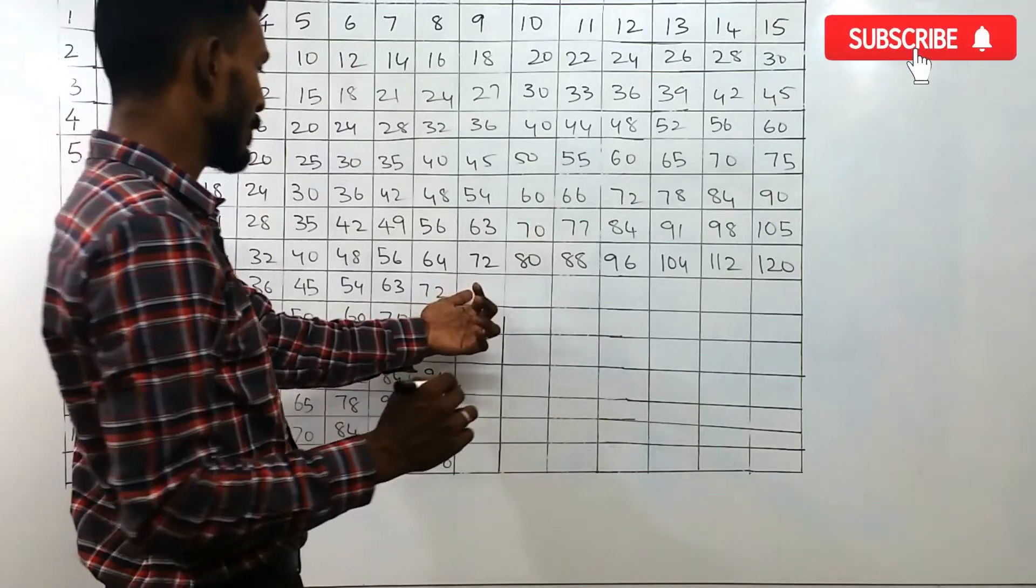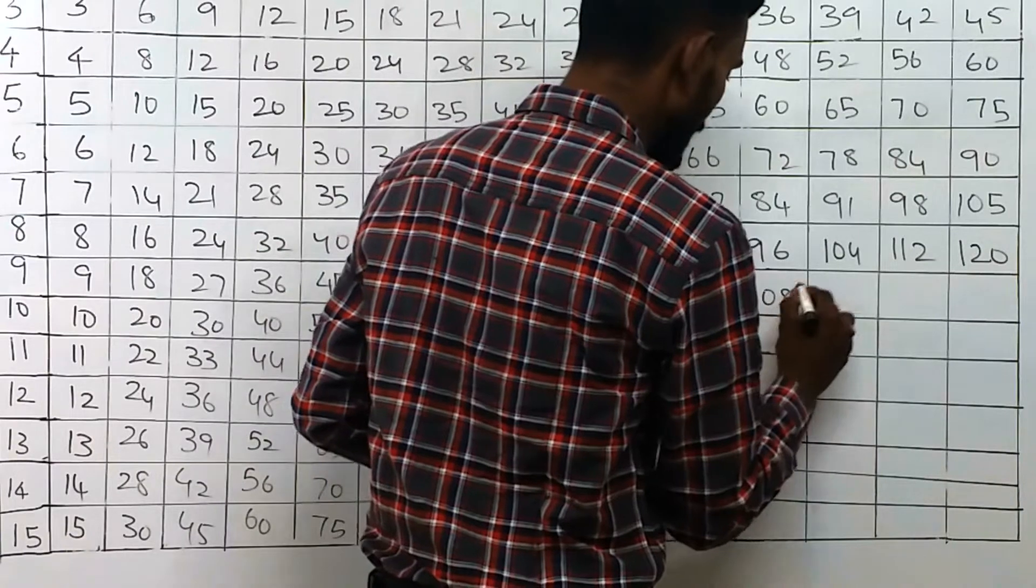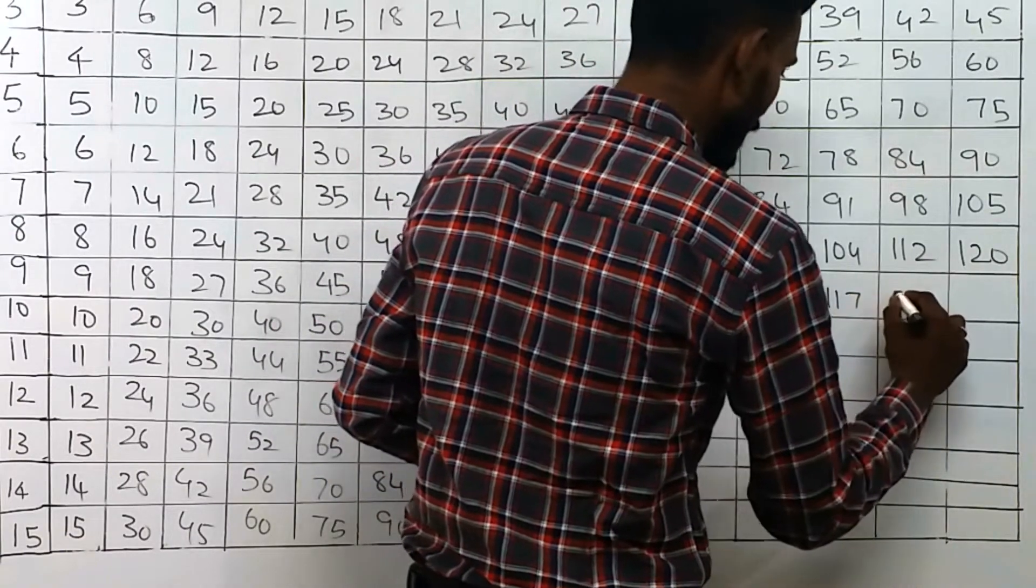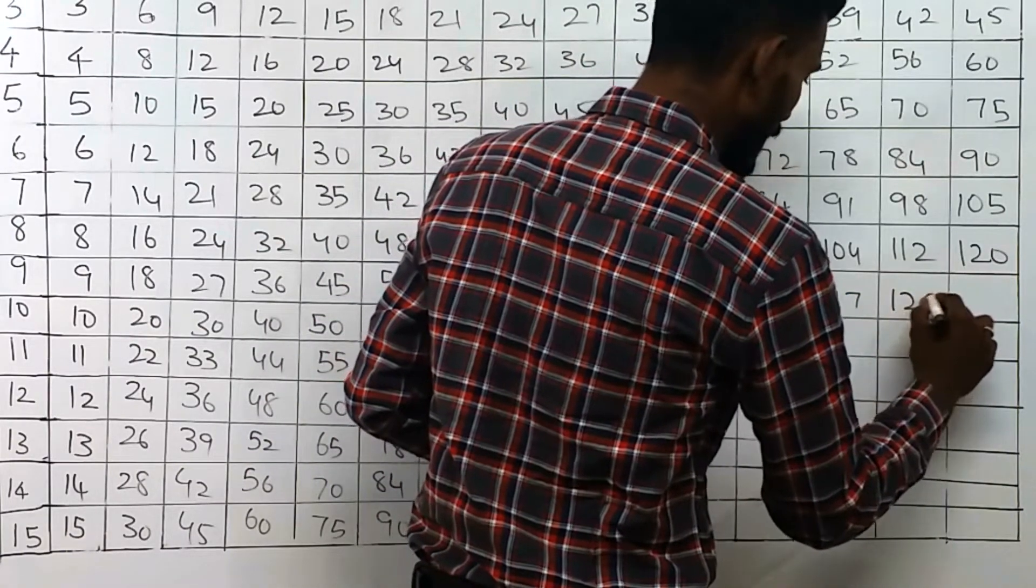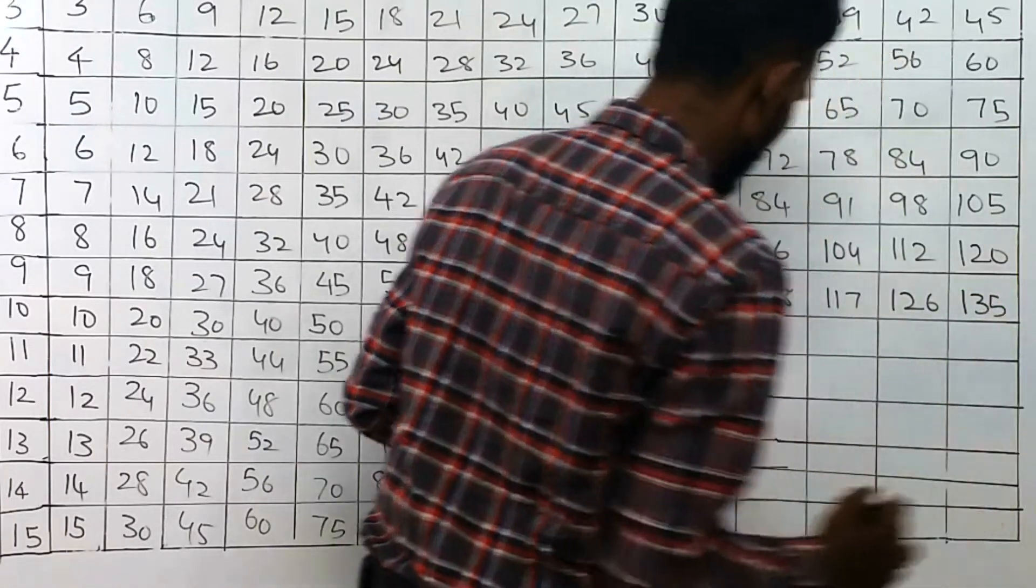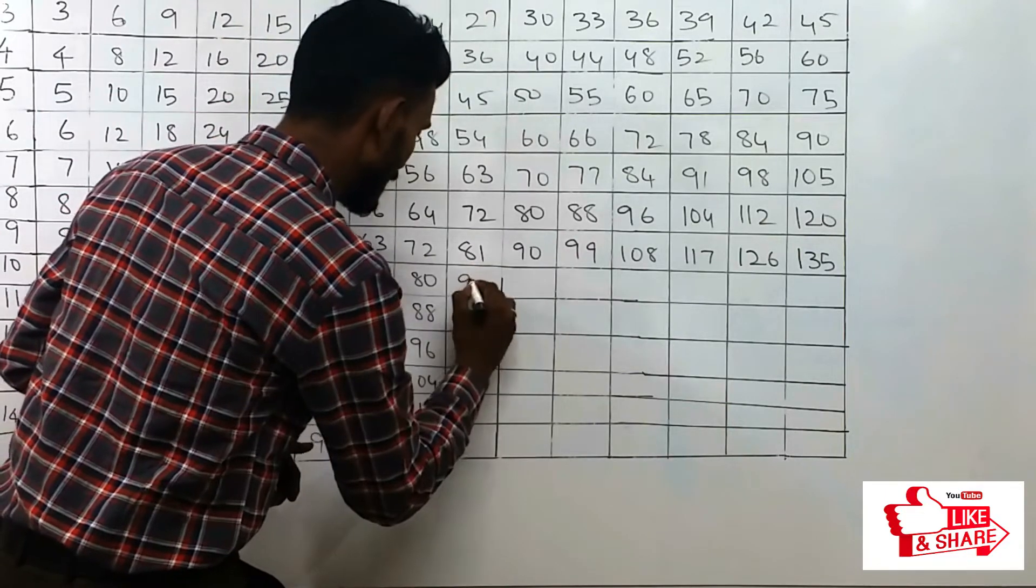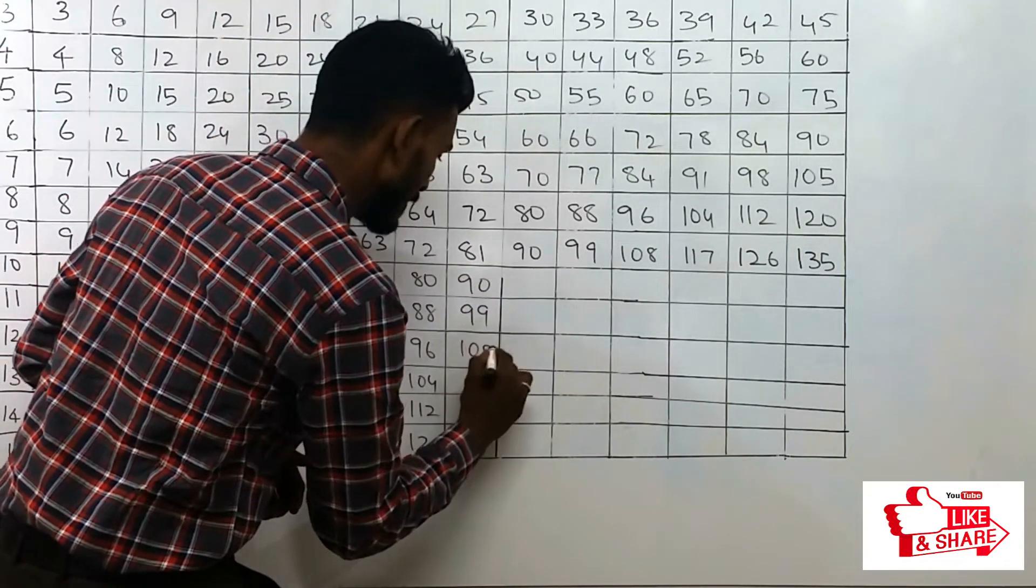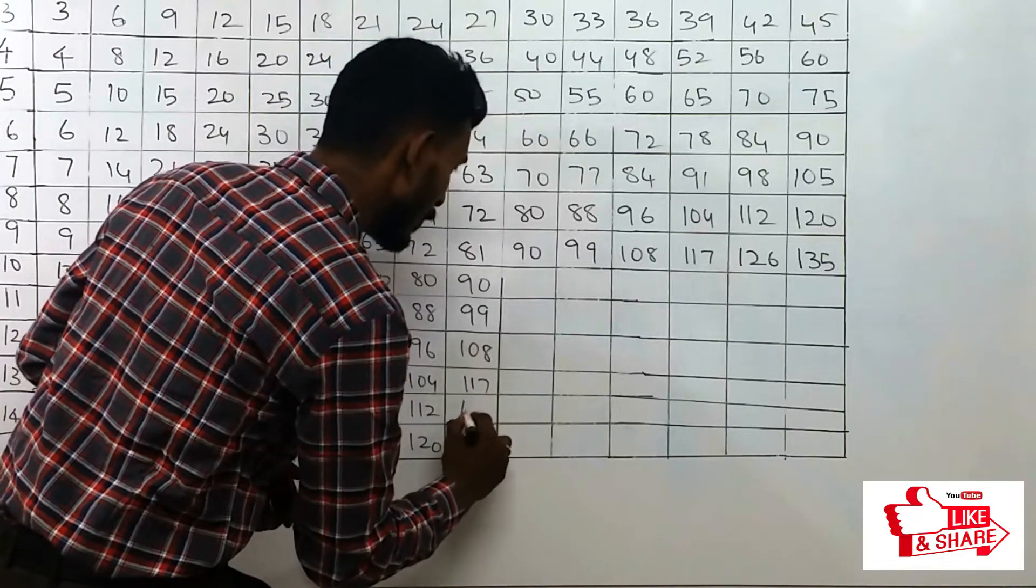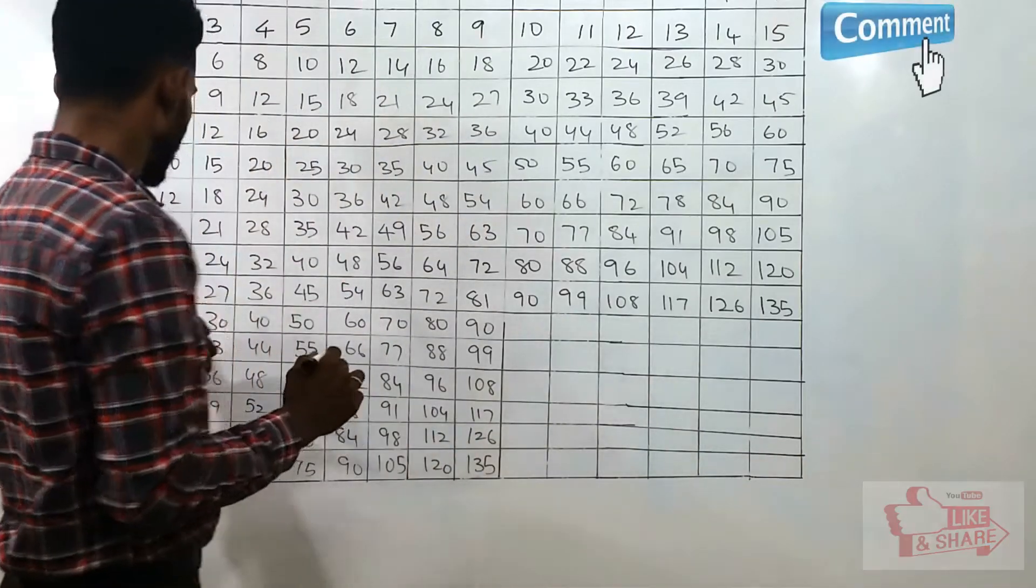In the 9th row, we have to add 9 to the number. That is 81, 90, 99, 108, 117, 126, and 135. Write this thing in the column as well: 90, 99, 108, 117, 126, and 135.